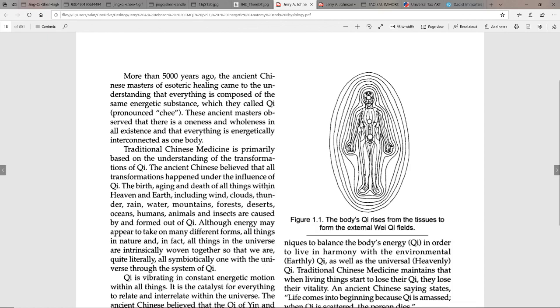Traditional Chinese medicine is primarily based on the understanding of the transformations of qi. The ancient Chinese believed that all transformations happened under the influence of qi - the birth, aging, and death of all things within heaven and earth including wind, clouds, thunder, rain, water, mountains, forests, deserts, oceans, humans, animals and insects.